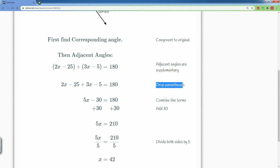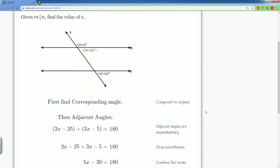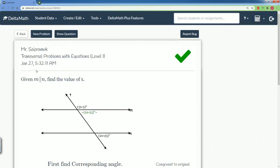Remember, we can drop the parentheses because there's a 1 in front. So there you go. Those are every single possible problem that you can see in the transversal problems with equations.